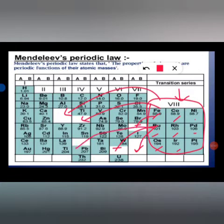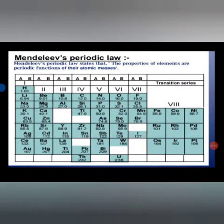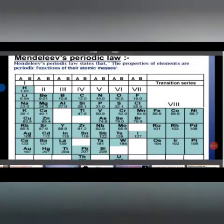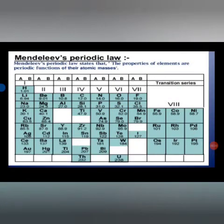Surprisingly, there are some gaps in this classification. These gaps indicate that some new elements may be discovered in the future, meaning there was scope in Mendeleev's periodic table for future elements to be accommodated.